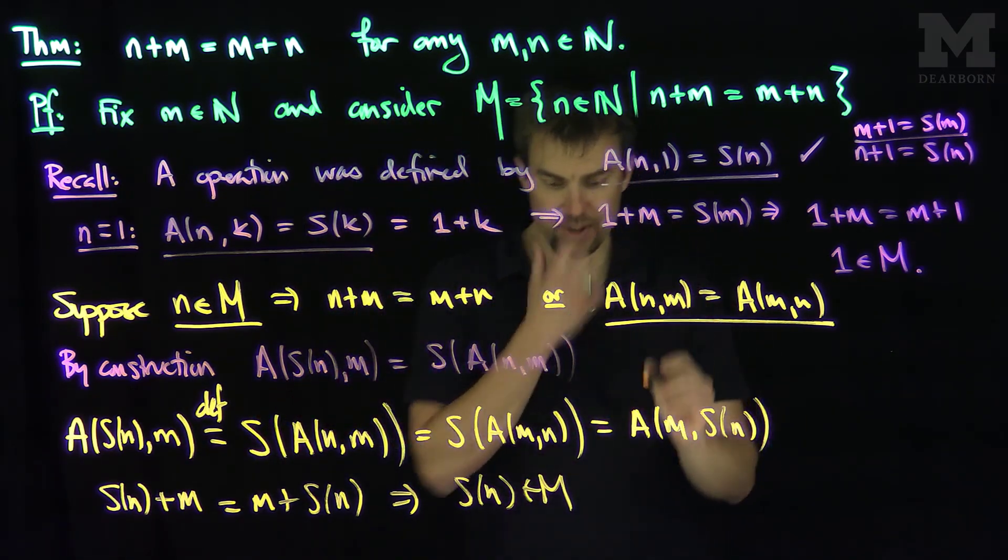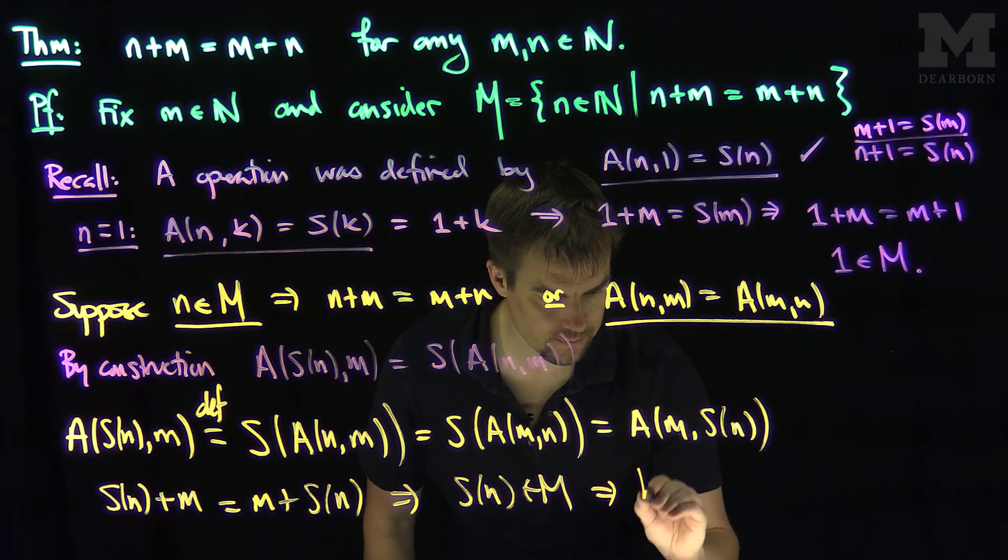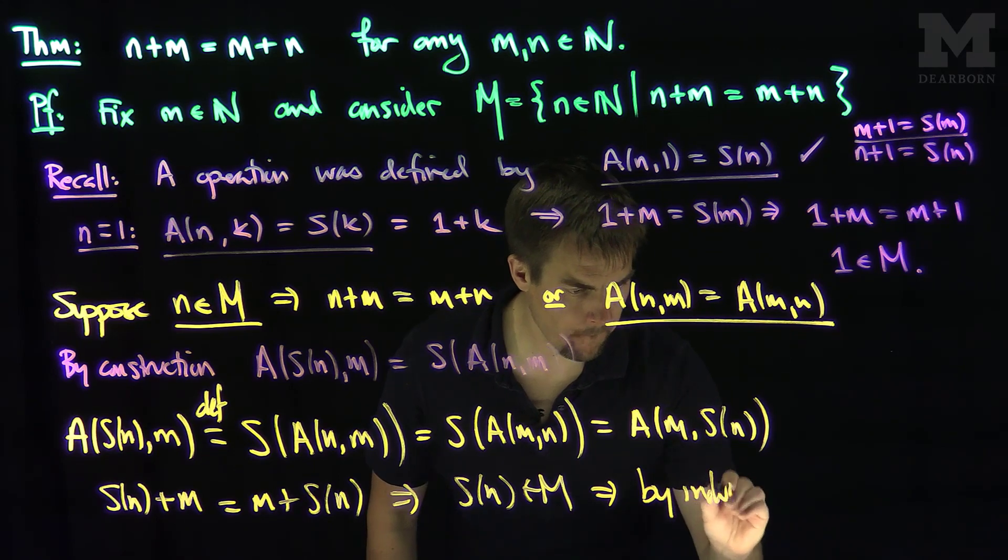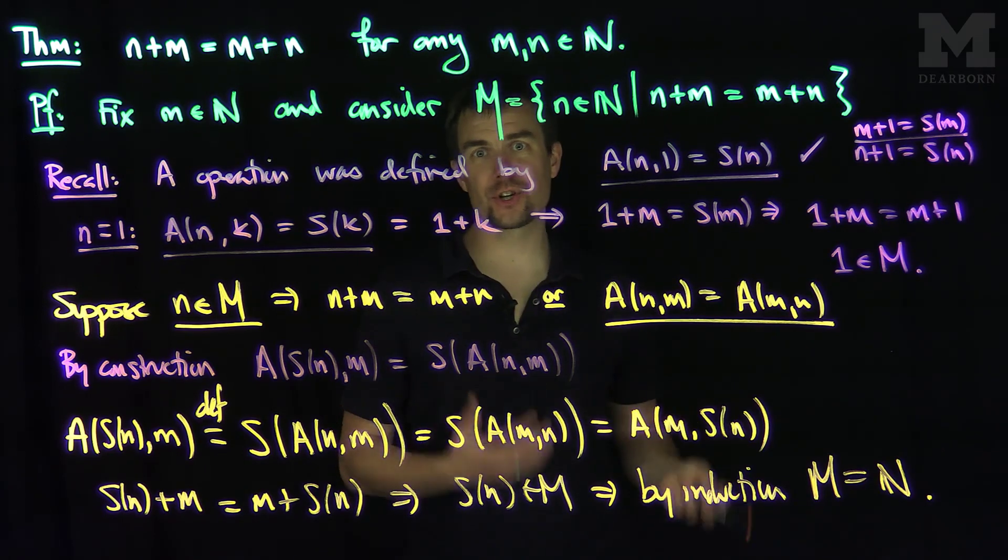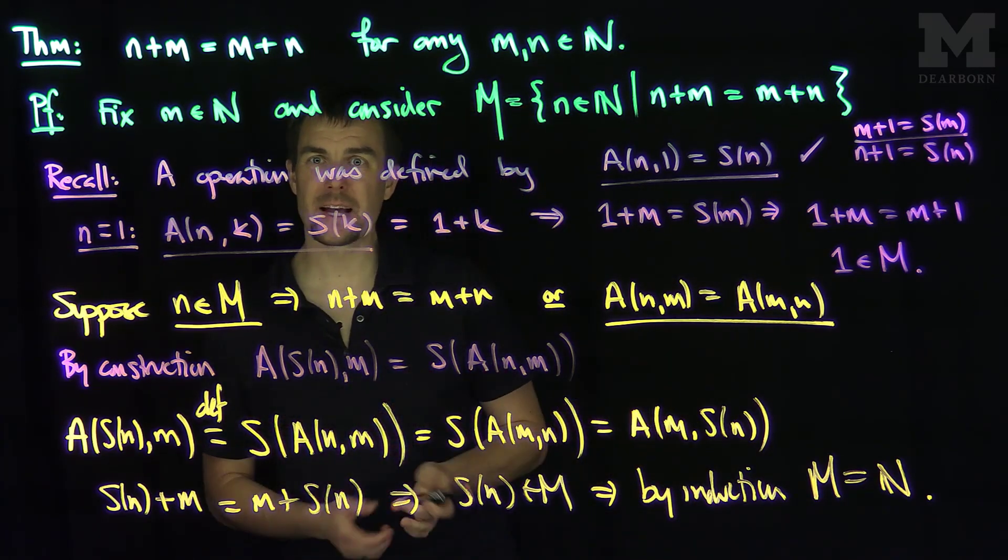And so now, by induction, M is equal to N. And so, by induction, M is equal to N. And therefore, addition is commutative on the natural numbers. Thank you very much.